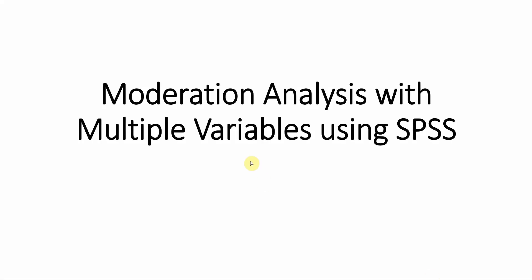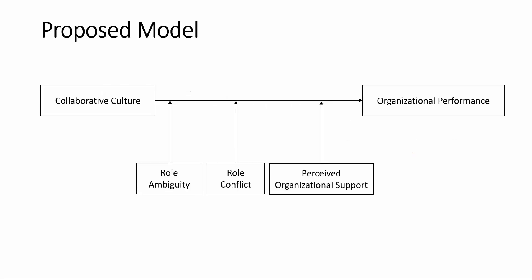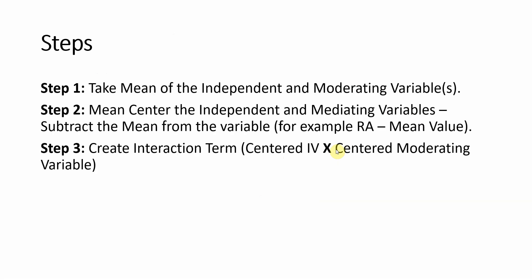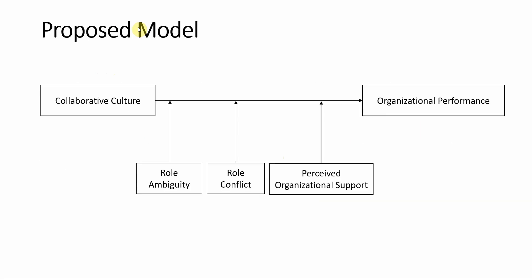In this session I'm going to look into how to perform moderation analysis with multiple variables using SPSS but without the use of the PROCESS macro. Let's assume I've got a model with an IV of collaborative culture and the DV of organizational performance, with three moderators. All these variables are continuous. The steps will assess the moderating role of these three continuous variables on the relationship between collaborative culture and organizational performance.